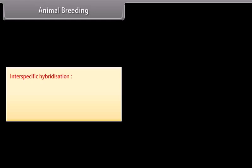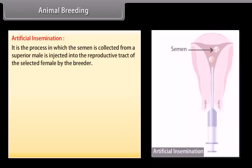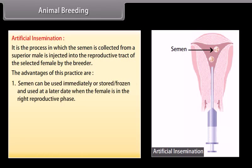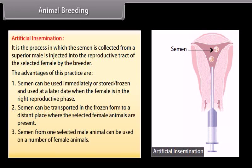Inter-specific hybridization is a method of outbreeding in which male and female animals of two different species are crossed to combine desirable features of both parents. For example, the mule is produced by a cross between a male donkey and a female horse. Artificial insemination is the process in which semen collected from a superior male is injected into the reproductive tract of a selected female. Semen can be stored or frozen for later use, transported to distant locations, and used on multiple females. The disadvantage is that the success rate is fairly low.